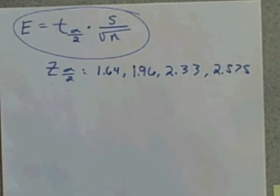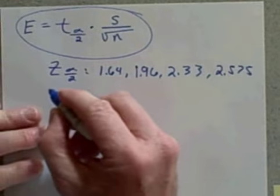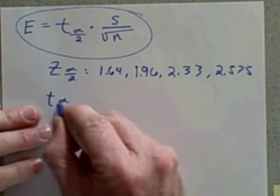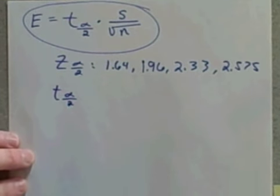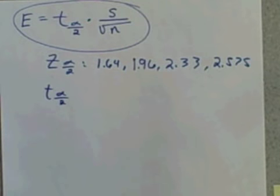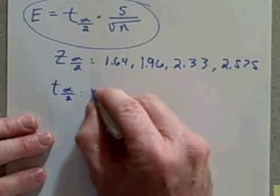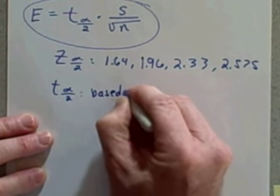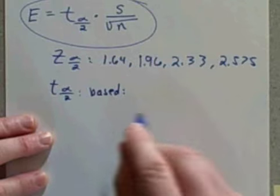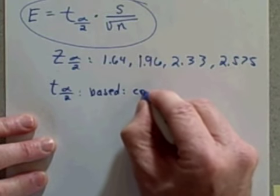For t sub α/2, there are not just four values—there are hundreds of critical values to choose from. Hundreds. Well, what is it based on then? All right, t sub α/2 is based on, just like z sub α/2, a confidence level—the same four confidence levels.